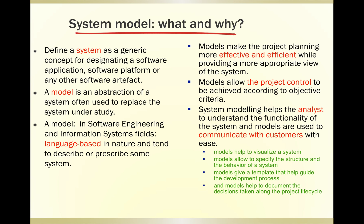We define a system as a generic concept for designating a software application, software platform, or any other software artifact. A model is an abstraction of a system, often used to replace the system under study. In software engineering and information systems, a model is usually language-based in nature and tends to describe or prescribe some system — which is a little different from the mathematical science approach.